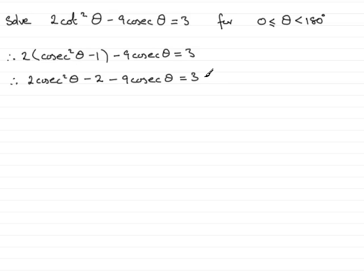Like all quadratics, I need to rearrange this into the correct format. That would be starting with the squared term, 2 cosec squared theta. Then the cosec theta term, minus 9 cosec theta. And then subtract 3 from both sides, so minus 5 equals 0. I've got it in the right format now.